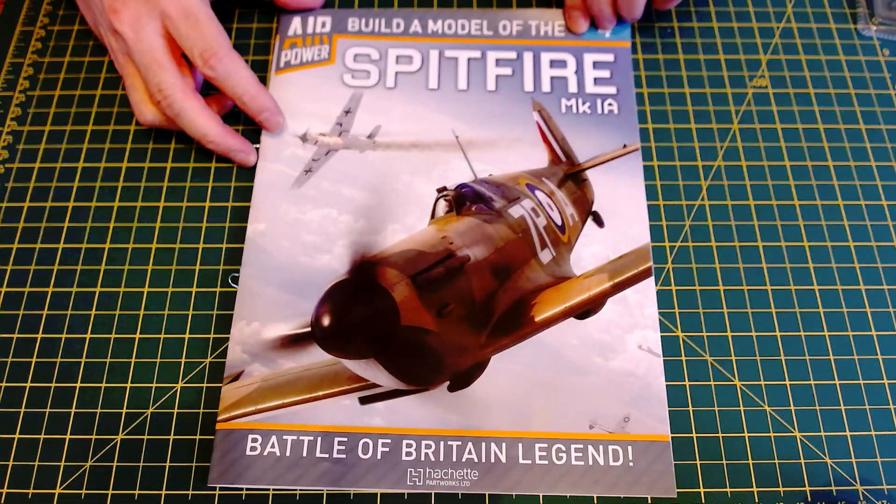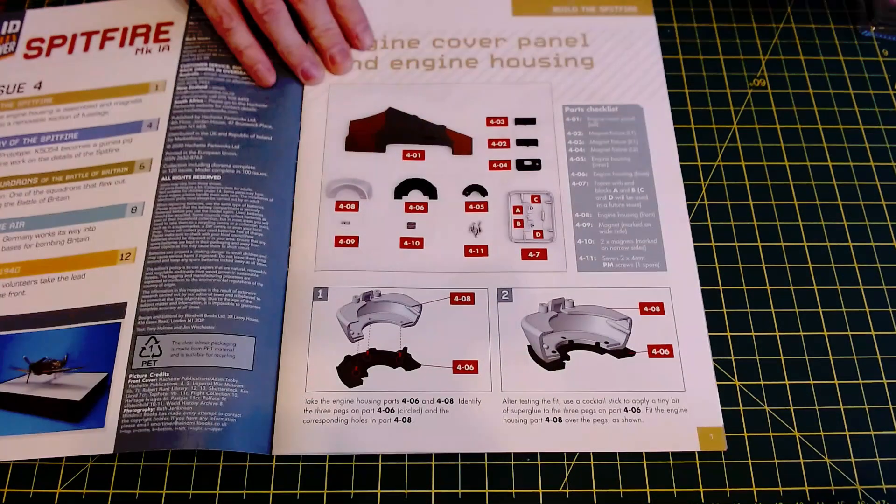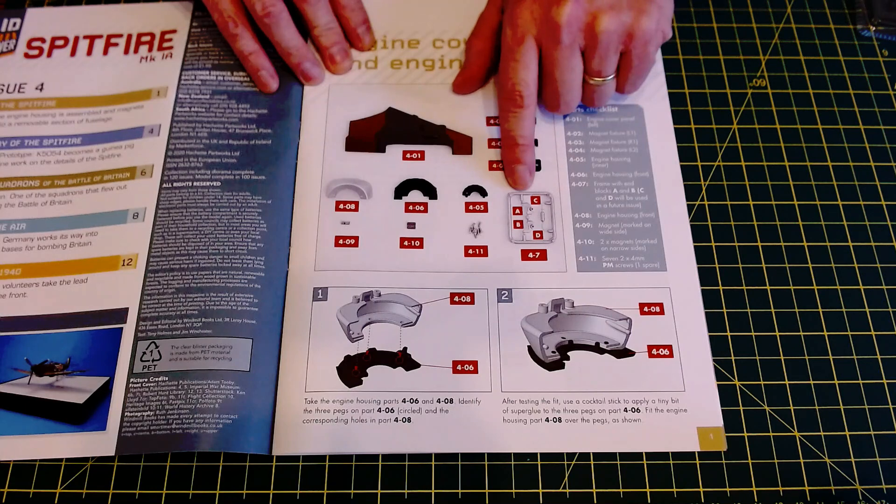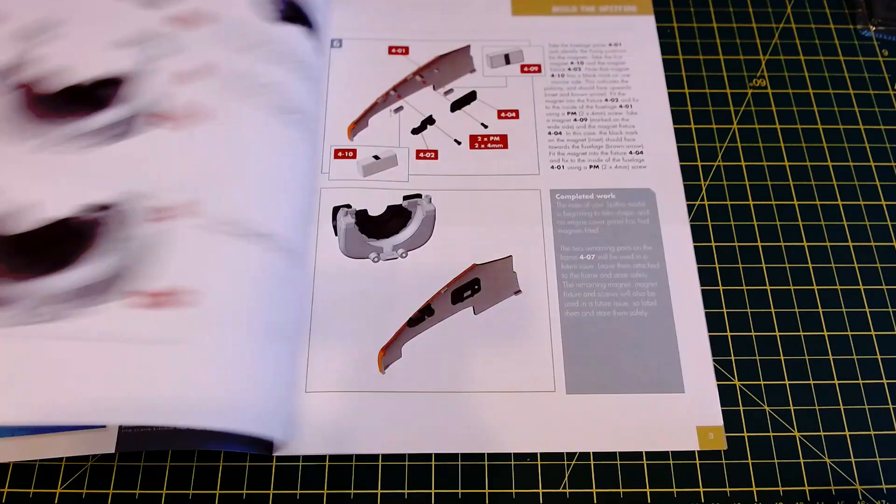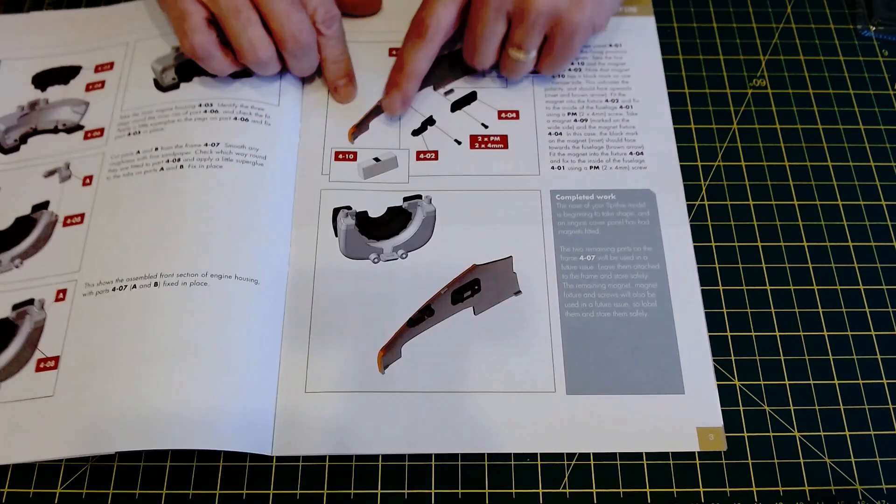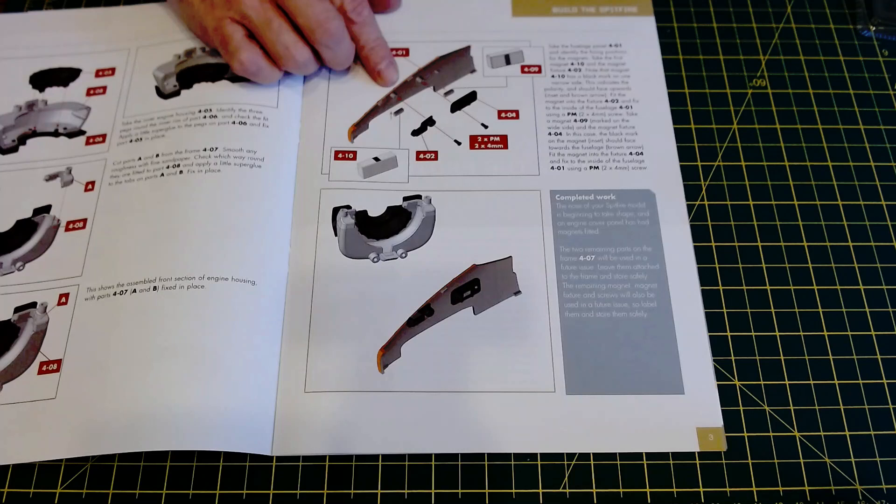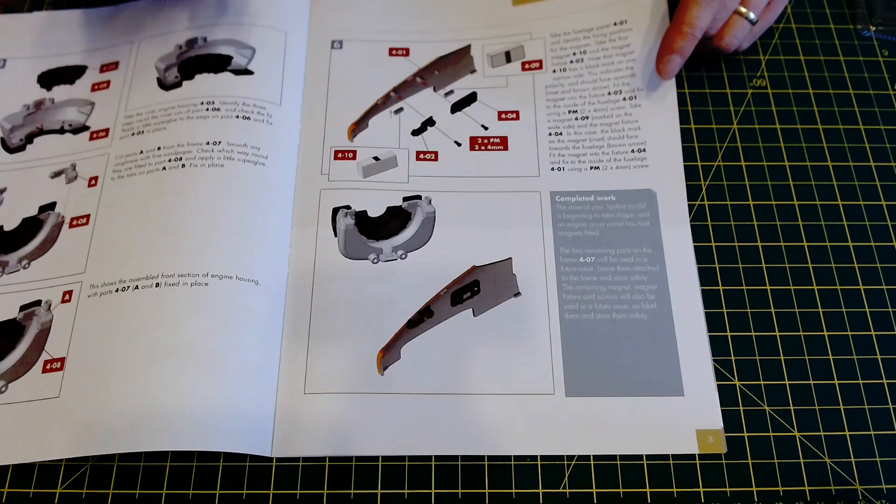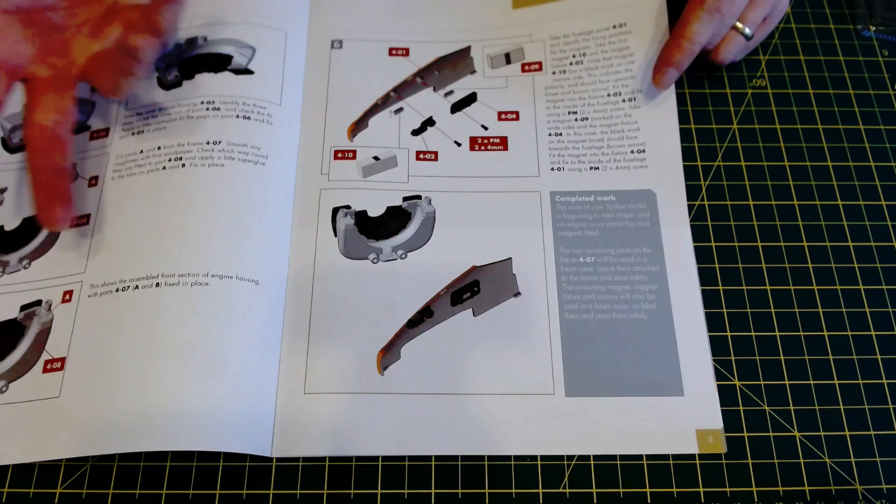Some magnets and some magnet holders, because I think this part's going to be removable, and the magazine itself. So issue number four. Just to show what we had there, which is the fuselage part. Some of the stuff is on sprues. I don't think we're using all of them in this issue. Some of the engine mounts, and the magnets are going to fit to the fuselage part because this is going to be a removable part.